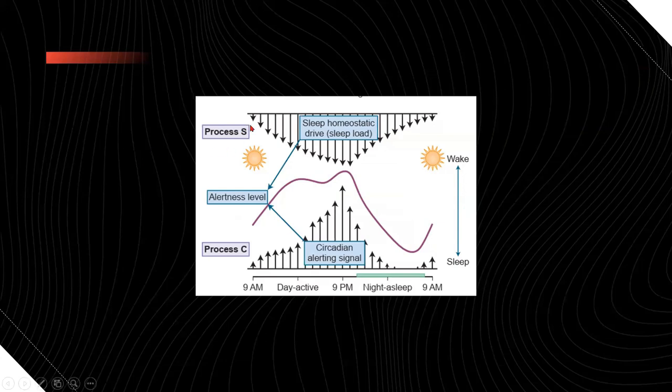There is something called process S and process C. There is circadian alerting signal and sleep homeostatic drive. One is for up, one is for down - like in a car, there is accelerator and brake. If process C is active, our alertness level will improve. If process C is coming down, then we will go for sleep. And in the same way, when the process S is more and more, the sleep homeostatic load will keep accumulating and through that it will cause us to go for sleep. For that, we need electrical signals and chemical signals.